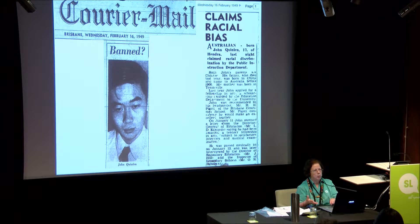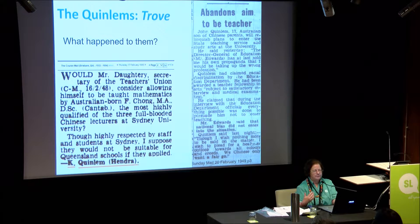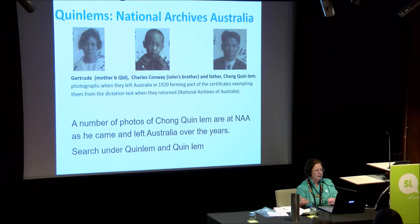This is 1949, which doesn't seem too long ago. It's extraordinary that it could be as blatant as that, especially when we would consider him to be a Queenslander — born, bred, culturally, everything. After four days of this, he said the Director General of Education has at last sold me his own propaganda that I would be taking up the wrong profession. So he eventually just conceded. He said, of course, we Chinese only want a fair go. Even though he was born here and his mother was born here, he identified with being Chinese, even though culturally the links had largely gone.